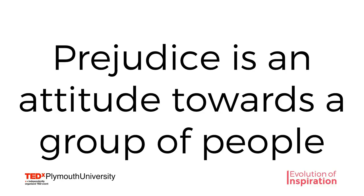Prejudice is an attitude towards a group of people. It's basically an evaluation that we make of the members of a group of people — for example, based on their race or based on their ethnicity, religion, age, etc.